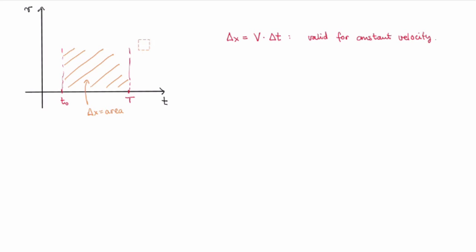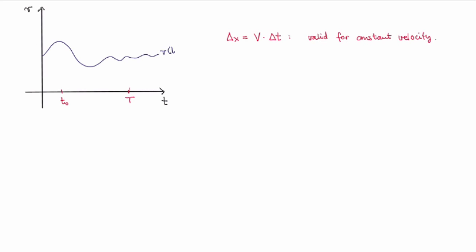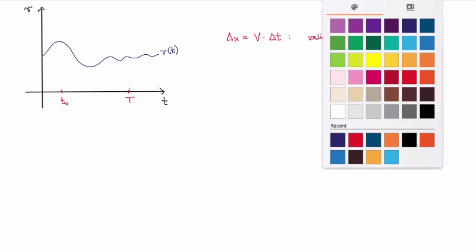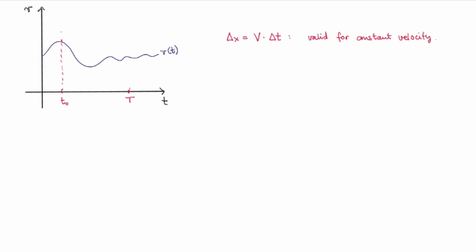Let me now erase this case and look at the more complicated case where the velocity is not constant. Let's consider an arbitrary velocity function. How can I calculate the distance traveled between t₀ and capital T? The idea is to be very clever: I cannot use the formula because the velocity is not constant. But what I can do is split or slice my time interval into very short time intervals — say one minute each.